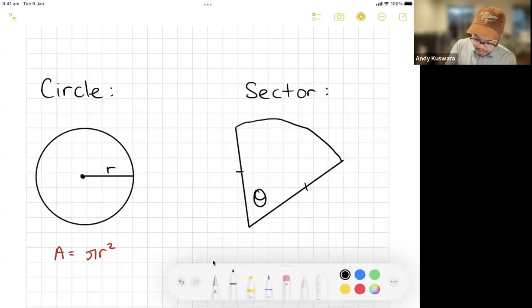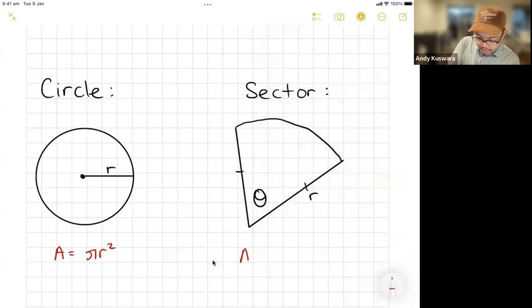If we're talking about a sector or part of a circle, I should probably have written that this was r as well. If I'm talking about a part of a circle and not the whole thing, my area, and this is given a new reference sheet, it's some sort of theta out of 360 because there's 360 degrees in the whole circle.